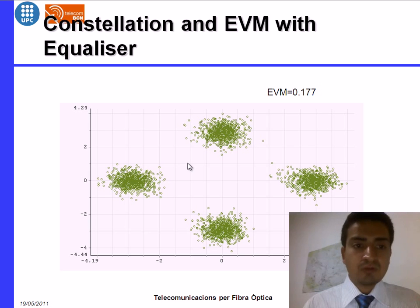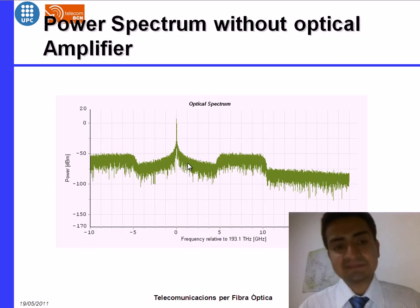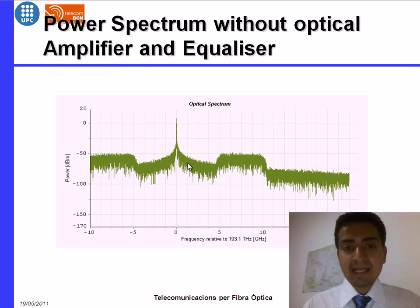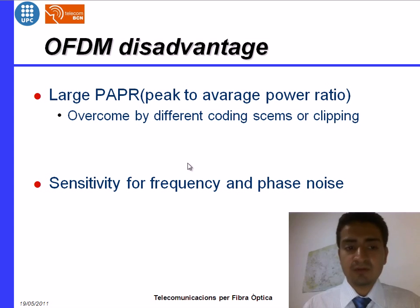So for proper reception or for proper optical communication, we always need optical filter, we always need equalizer. And at the end I want to tell you the drawback of OFDM.